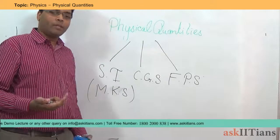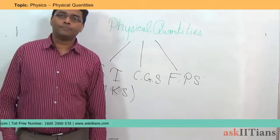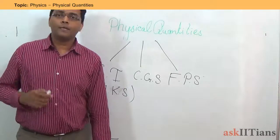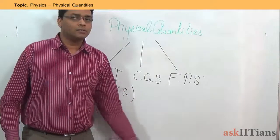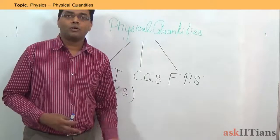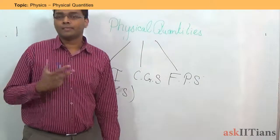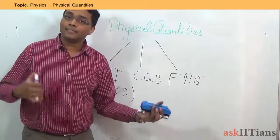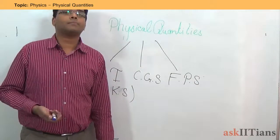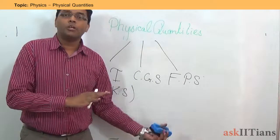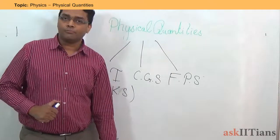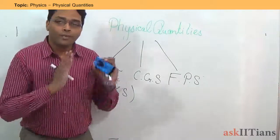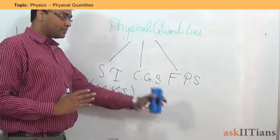But why do we need these systems of units? For a simple reason — let's say you try to buy a cloth from a shopkeeper. The shopkeeper tells you it is 300 cm, but you do not have a centimeter scale; instead you have a meter scale. There should be some system that allows us to convert from one system of measurement to another. So there has to be something linking the different systems of units, and that is why we classify and specify them.